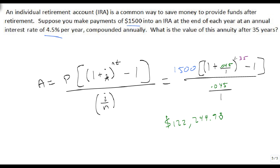So that's how much money we'll get 35 years after if we pay $1,500 into an IRA with an annual interest rate of 4.5% interest compounded annually. If we do this as an annuity, this is how much money we will have.